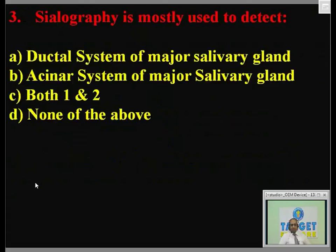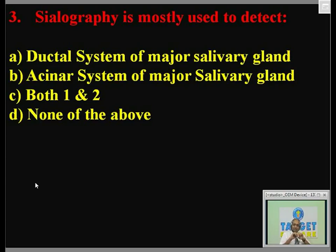Third question: sialography is mostly used to detect — note the word 'mostly.' Options: ductile system of the major salivary gland; acinar system of the major salivary gland; both one and two; none of the above. Sialography can detect whether there are salivary stones or obstructions in the duct, and it can also show the acinar system of the salivary gland. Answer is both one and two.